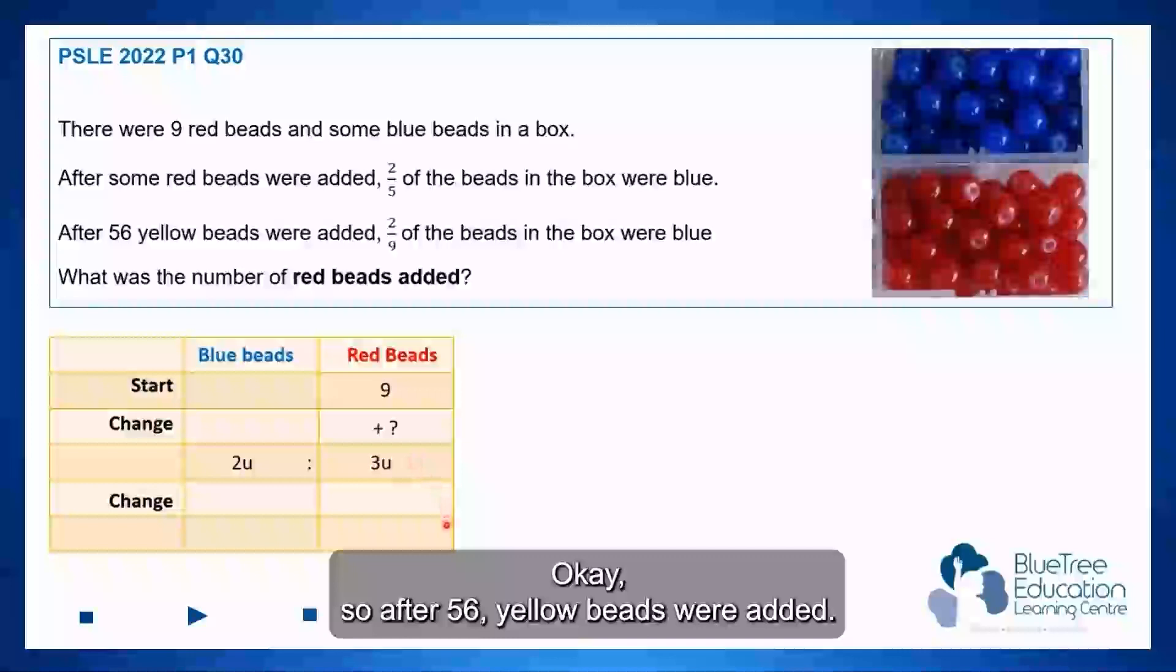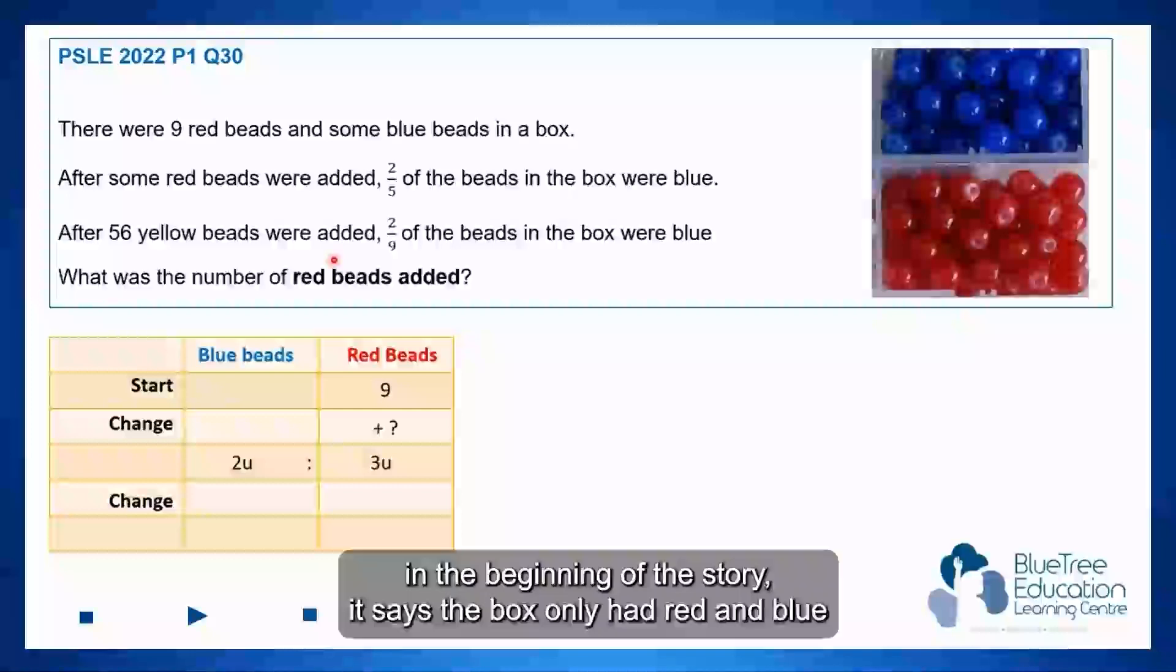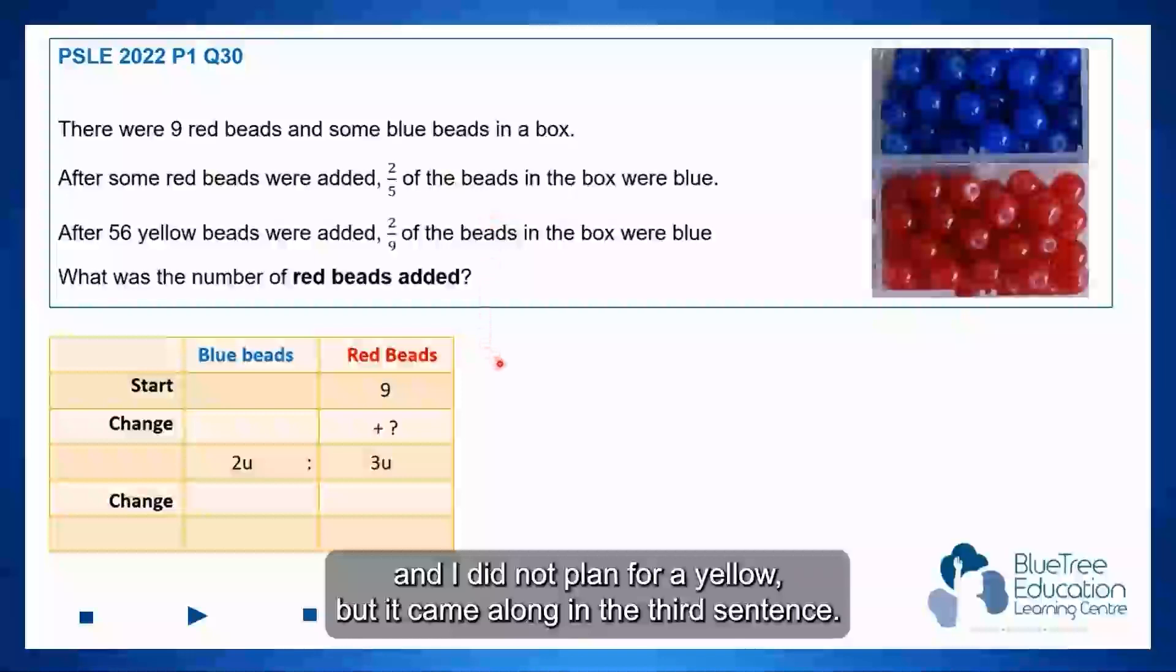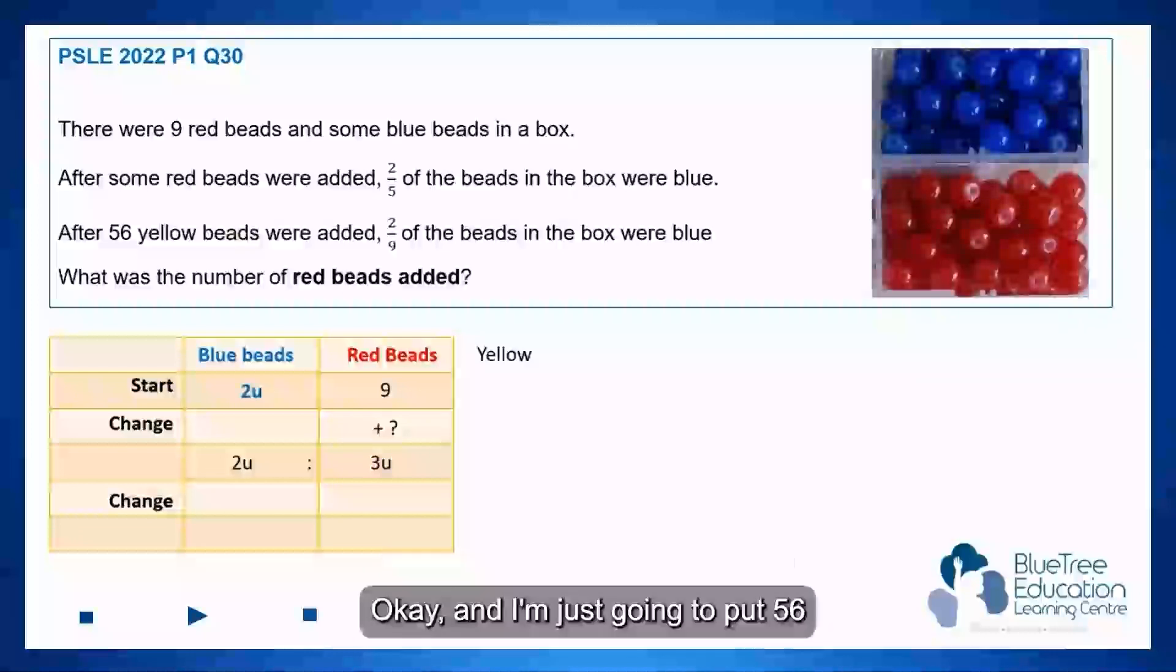After 56 yellow beads were added. Now take note of the statement—56 yellow beads were added. At the beginning of the story it says the box only had red and blue. I did not plan for yellow, but it came along in the third sentence. So I'm just going to put yellow outside the box over here, and I'm just going to put 56 as one of the changes that's happening.